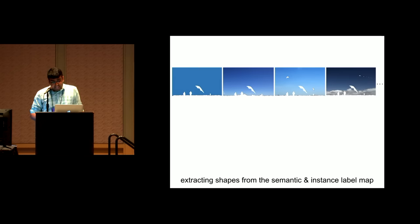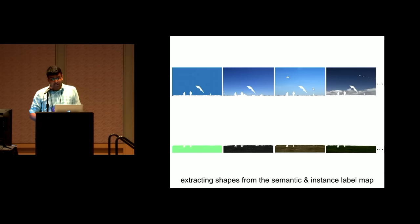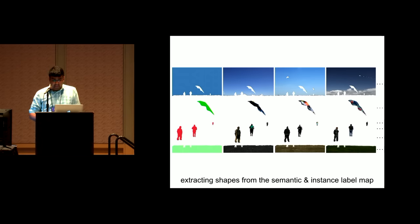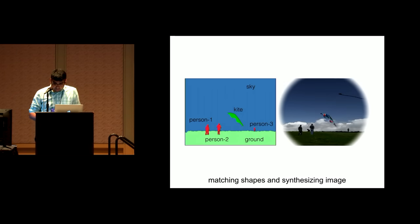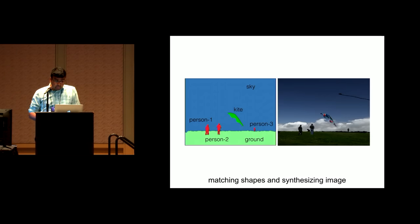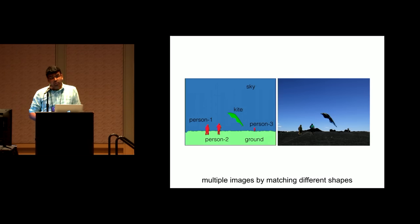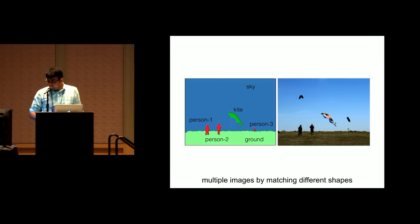We extract different shapes from our input and find relevant matches by simple correlation of shapes in the shortlisted set of exemplar image matches. As an example, we can get different sky components, ground, person, kite, etc. A simple assembly of these components gives us a new image. Importantly, multiple outputs can be easily generated by mixing and matching these components.